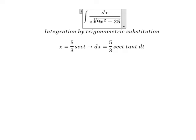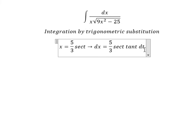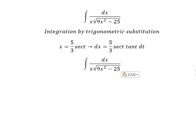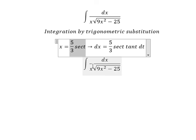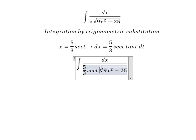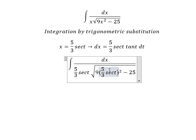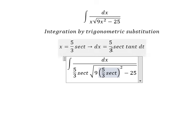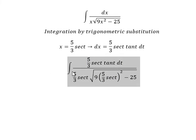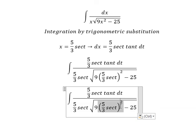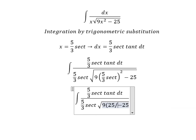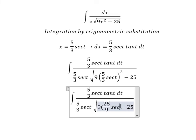So I will put this substitution in here. For dx we change by this expression. Now we need to simplify this one. We have 25 over 9 secant of t squared, and the 9s cancel.